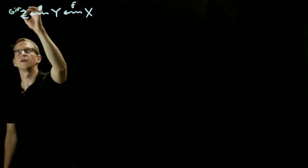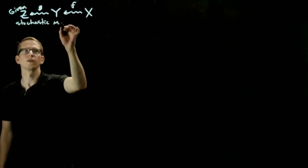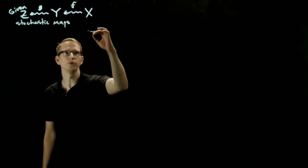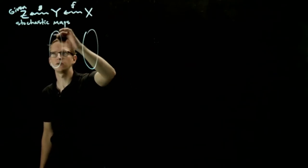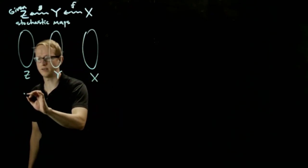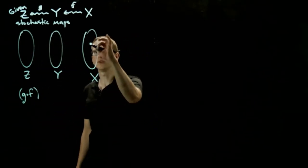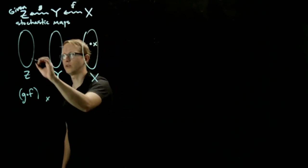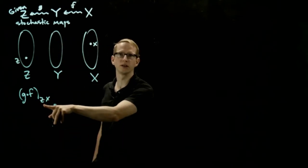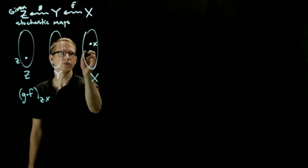So given stochastic maps, we can define a composition of these two. Before I write down the formula, let's think about how we would do this. So if here is X, here is Y, here is Z, what we want to define is a notion of composition. If you give me an element in X and you give me an element in Z, I want to know, given x, what is the probability that z occurs, and there's an intermediary, y, here.